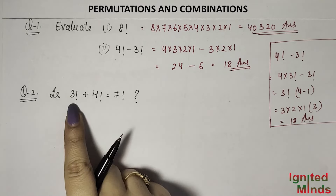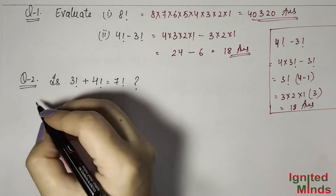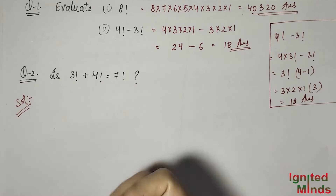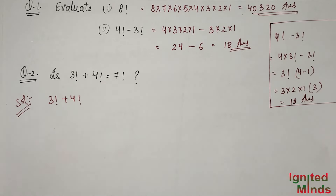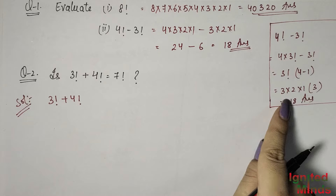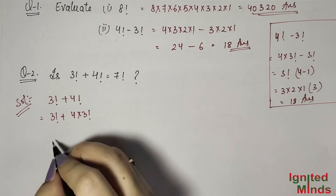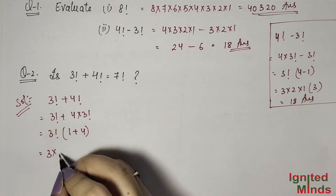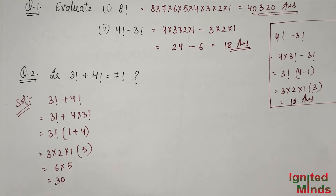The next question asks: is 3 factorial plus 4 factorial equal to 7 factorial? Let's check. Using the clever method: 3! is common in both terms, so 3! + 4! = 3!(1 + 4) = 3! × 5. That gives 3 × 2 × 1 × 5 = 6 × 5 = 30.